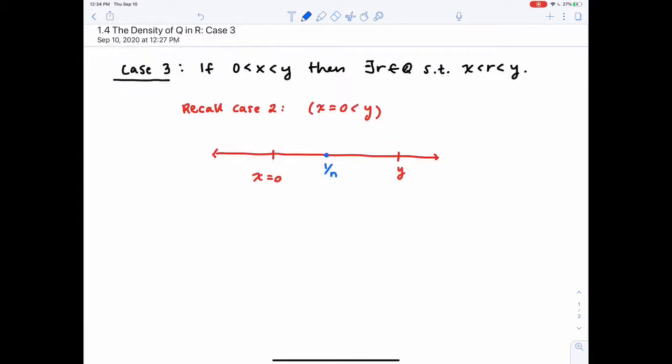And that's a rational number. So, we can just use r to be 1 over n.